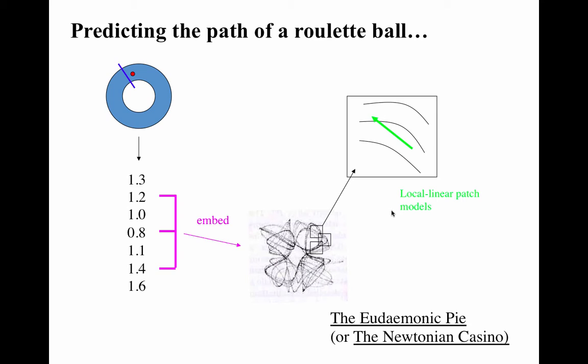This slide is a sketch of one of the strategies that they tried. They gathered data, then used delay coordinate embedding to reconstruct the full dynamics from that data — that's the purple arrow down there, and the picture in the bottom middle. Then they modeled that trajectory by taking little patches of the trajectory and examining the direction of flow in each patch. The simplest way to do this is to fit a line to the flow in each box. Then, to use that model, you drop a new point into your patches, follow the arrow for whichever patch you're in until you exit it, then follow the next patch's arrow, and so on — giving you a prediction of where the ball will be so you can place a bet.